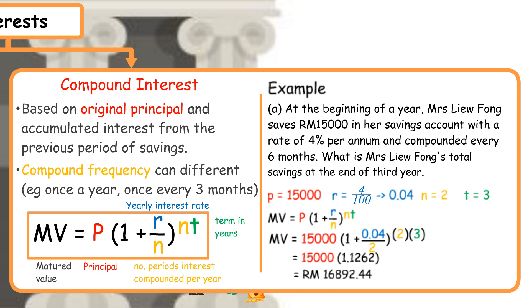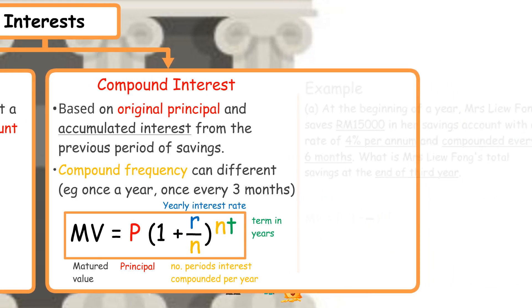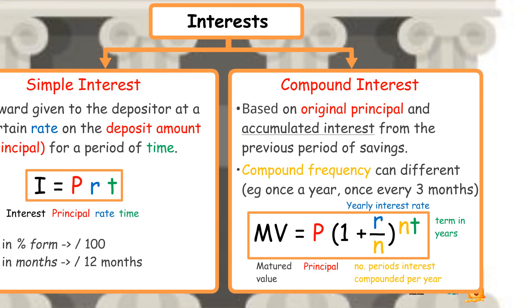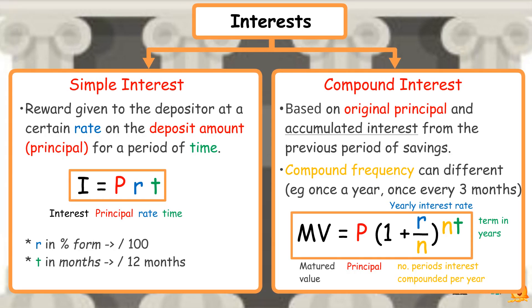For compound interest, the higher the compounding frequency, the higher the future value of savings. Savings with compound interest give higher returns than simple interest.